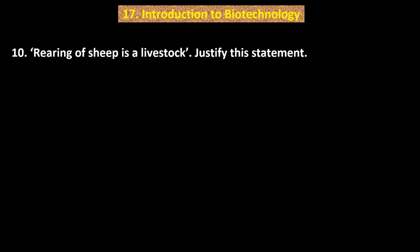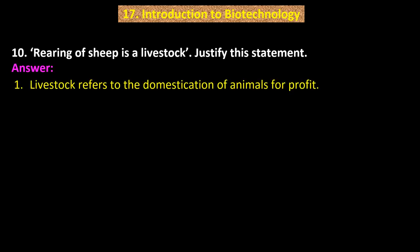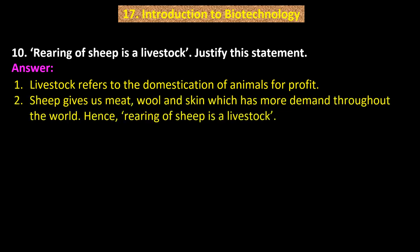Question number 10. Rearing of sheep is a livestock. Justify this statement. Answer: Point 1 — Livestock refers to the domestication of animals for profit. Point 2 — Sheep gives us meat, wool and skin which has more demand throughout the world. Hence, rearing of sheep is a livestock.